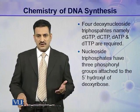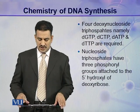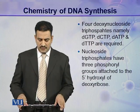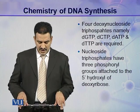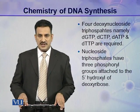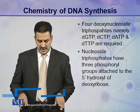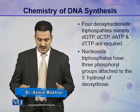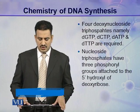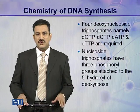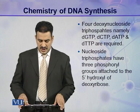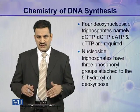In the case of the first requirement, which is deoxynucleoside triphosphate, there are four types of deoxynucleoside triphosphates and they are named as dGTP, dCTP, dATP, and dTTP. These four dNTPs are required. dNTPs means deoxynucleoside triphosphates. These are the nucleotides which are present.